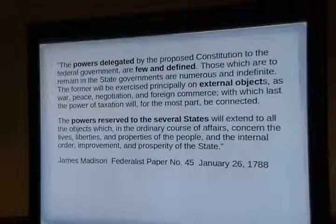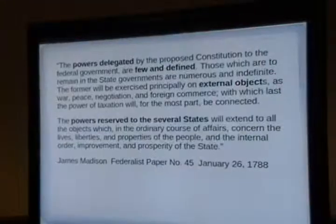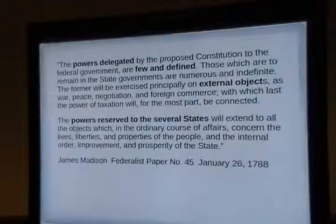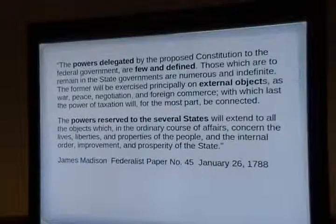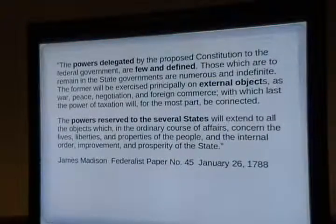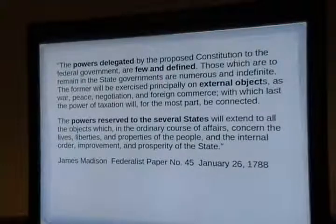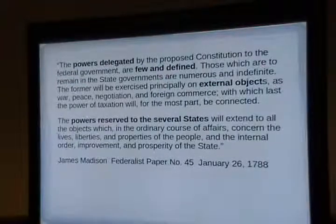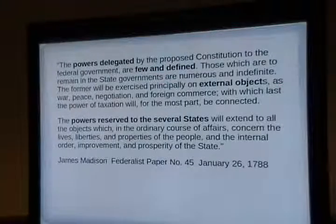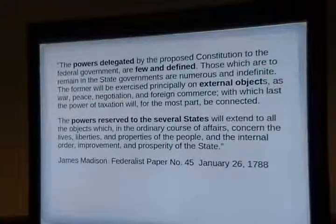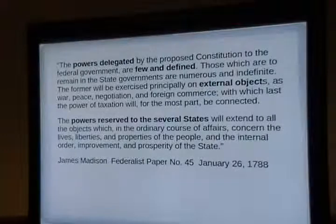Madison in Federalist Paper 45 says: 'The powers delegated by the proposed Constitution to the federal government are few and defined, and those which remain with the state governments are numerous and indefinite.' The former — federal powers — shall be exercised principally on external objects such as war, peace, negotiation, and foreign commerce, which the power of taxation will, for the most part, be connected. The Continental Congress did not have power to tax, so General Washington had to beg the states to volunteer money during the Revolutionary War.